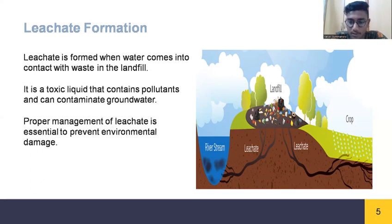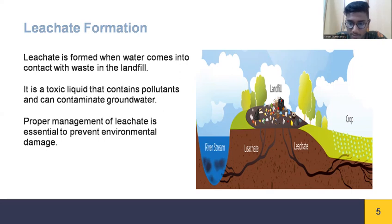The leachate collection sumps consist of an HDPE riser and a submersible pump. Leachate drains to the leachate collection system where it is transferred to a central collection pump and piped to an on-site holding pond. If necessary, the leachate is transported to an approved off-site wastewater treatment plant for disposal. The system is designed to automatically pump leachate to maintain compliance with state requirements. Monthly verification measurements are taken by independent technicians to ensure regulatory limits are met. Leachate is a toxic liquid containing pollutants that can contaminate groundwater.